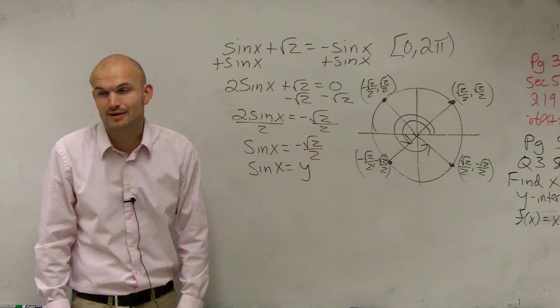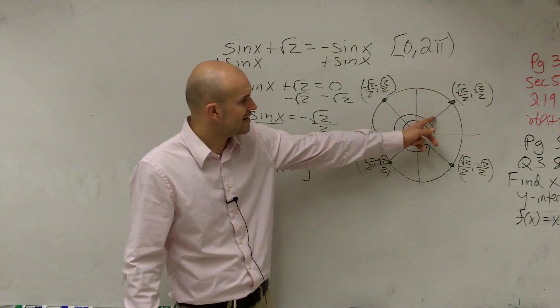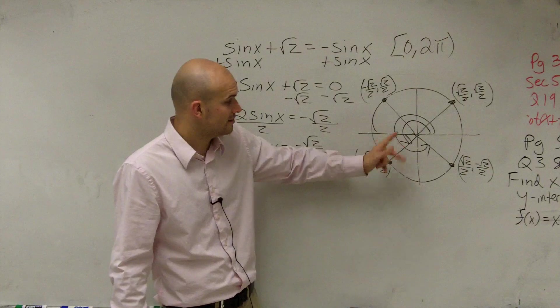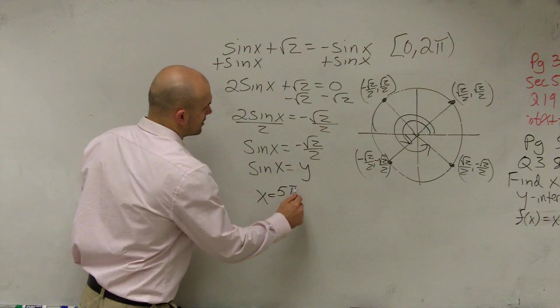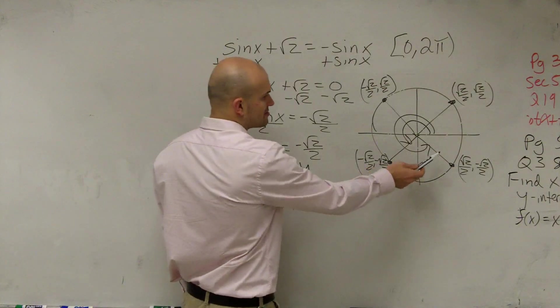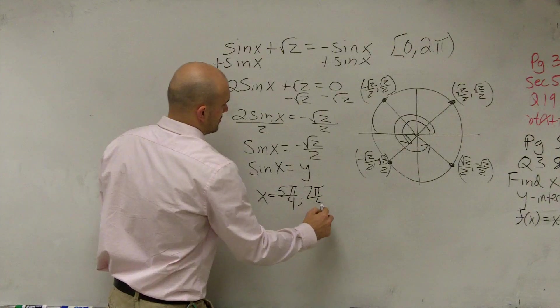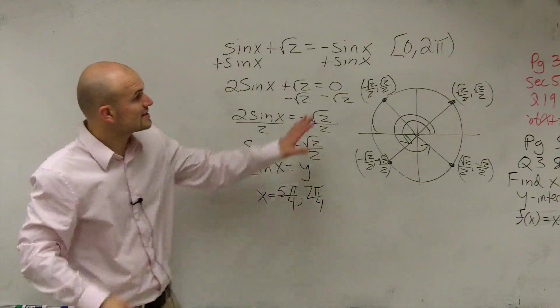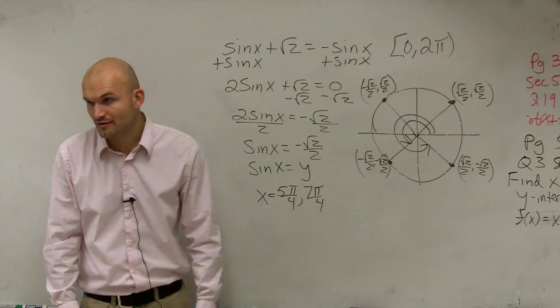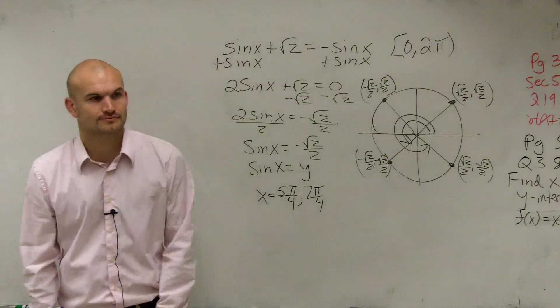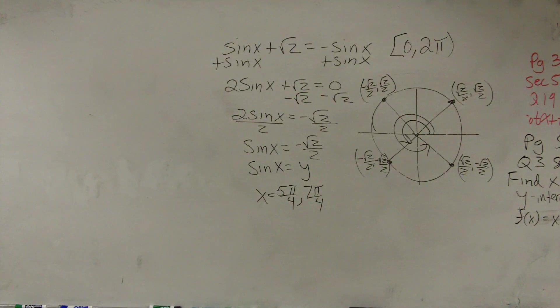It only occurs at those two angles. So let's go ahead and write in what those two angles will be. Well, this pi 4 is 2 pi, 3 pi, 4 pi, so that'd be 5 pi. So you could say x is equal to 5 pi over 4, 6 pi, 7 pi. So therefore, my solutions on the interval of 0 and 2 pi is going to be 5 pi divided by 4 and 7 pi divided by 4. I'm done. Make sense?